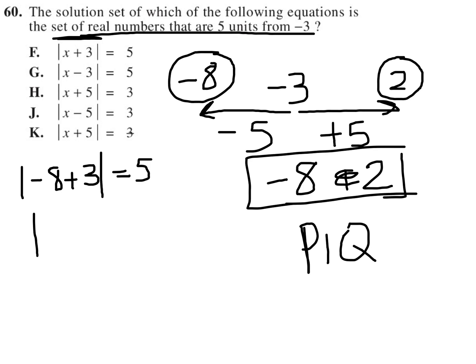Negative eight plus three is negative five. And yes, it is true that the absolute value of negative five is equal to five. So this is a true statement.